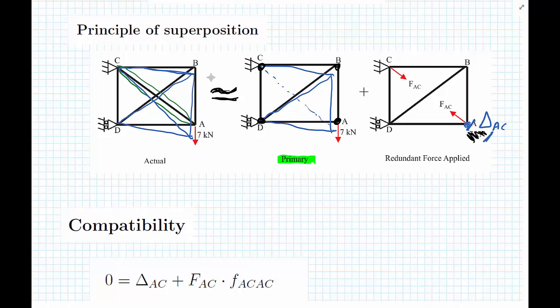When we have internally redundant structures we're going to show examples where we have external redundant structures where we have too many supports, but when we have an internally redundant structure this principle of superposition is only approximate.